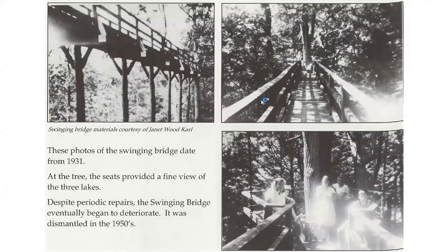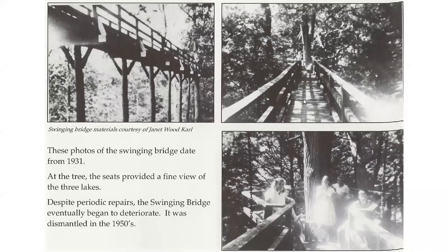The swinging bridge was built in 1910 by Jonathan Bulkley, who owned property at the eastern end of Lake Ripawam. It stretched about 60 feet from a cliff on his property out to a tulip tree, engineered to swing back and forth. It was a favorite of hikers and visitors from those rustic camps — a destination point well beyond just the Bulkley property. By the 1950s it was deteriorating and was taken down.